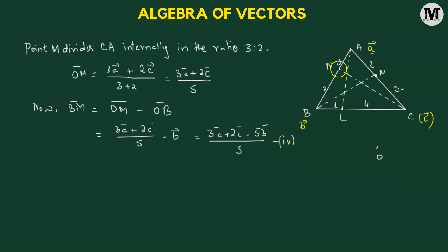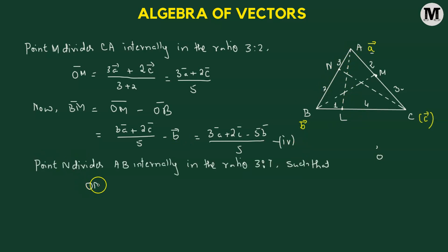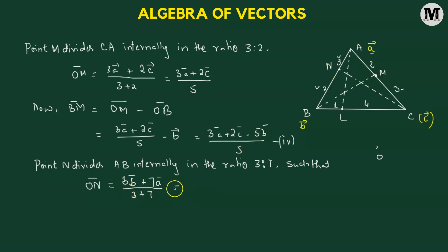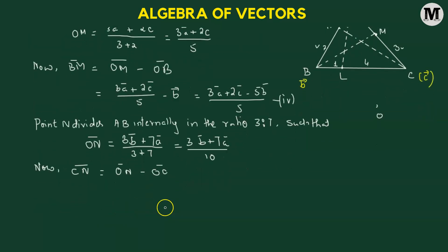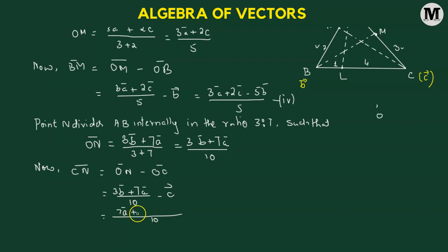Finally, point N divides AB in the ratio 3 to 7. The ON vector equals 3 times vector B plus 7 times vector A, divided by 3 plus 7, giving 3B vector plus 7A vector divided by 10. Then vector CN equals ON minus OC, which is 3B vector plus 7A vector divided by 10 minus vector C, giving 7A vector plus 3B vector minus 10C vector, all divided by 10. We label this as number 5.